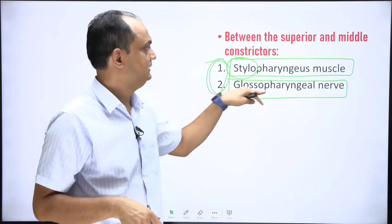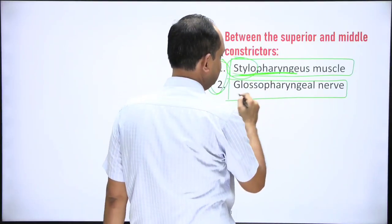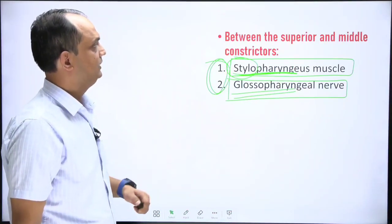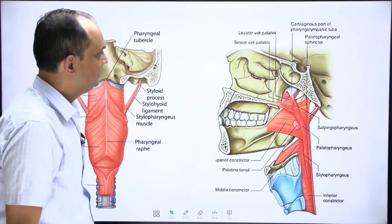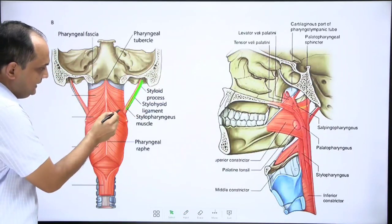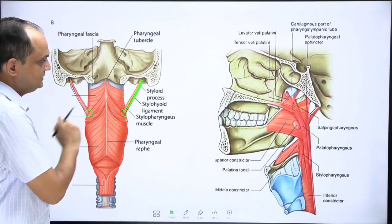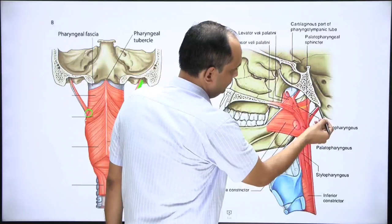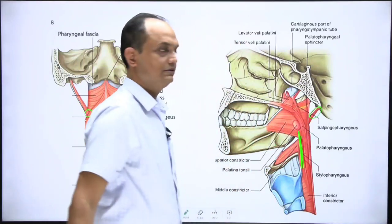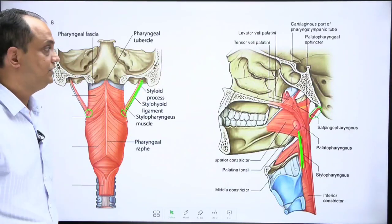Inside the pharynx, the glossopharyngeal nerve is sensory in nature. It supplies the stylopharyngeus muscle, then enters inside the pharynx through this gap and supplies the sensory part of the pharynx and the base of the tongue. In this diagram, you can appreciate the stylopharyngeus arising externally, then entering through the gap between the superior and middle constrictor, taking origin from the styloid process and appearing inside the pharynx.